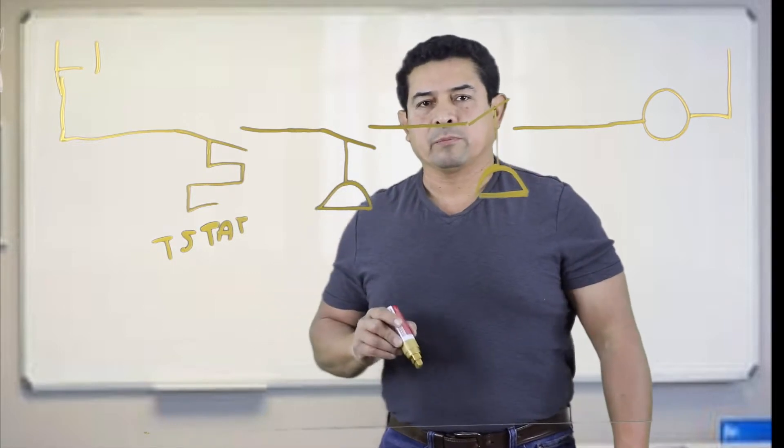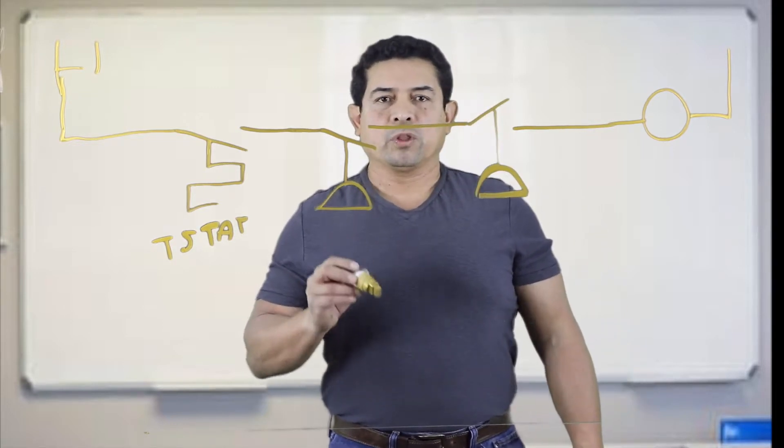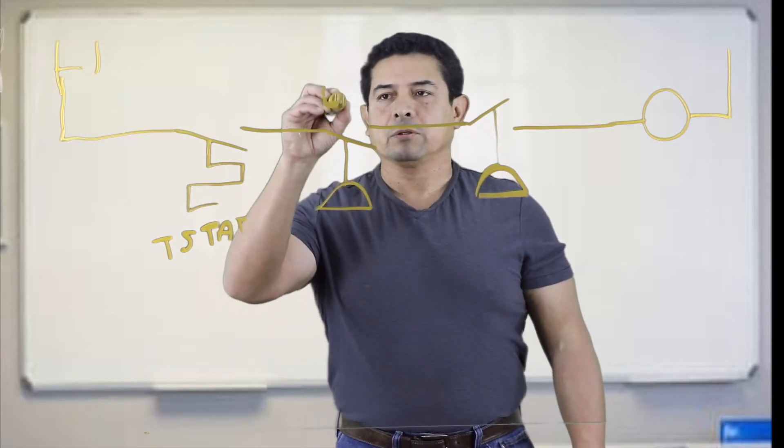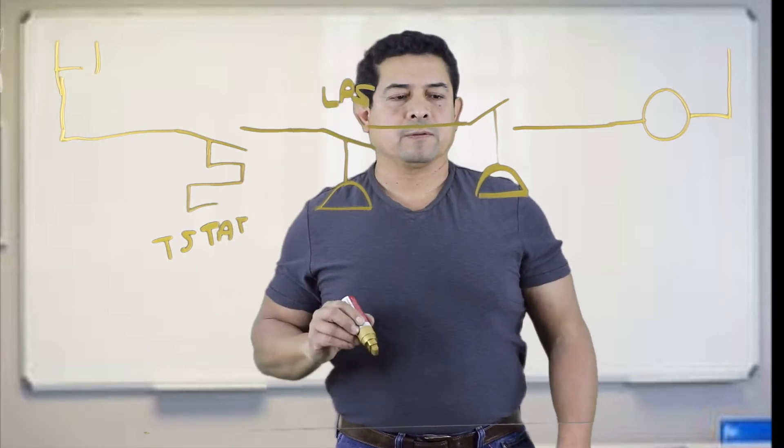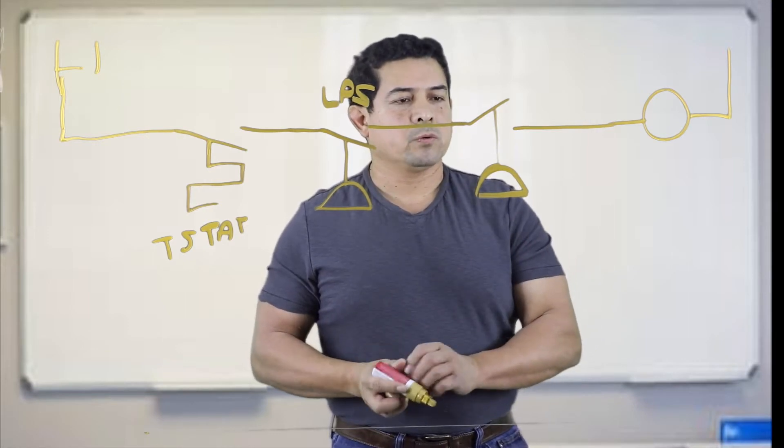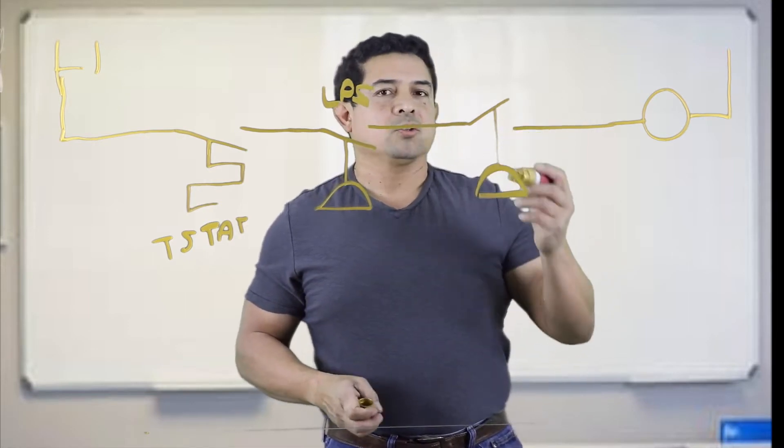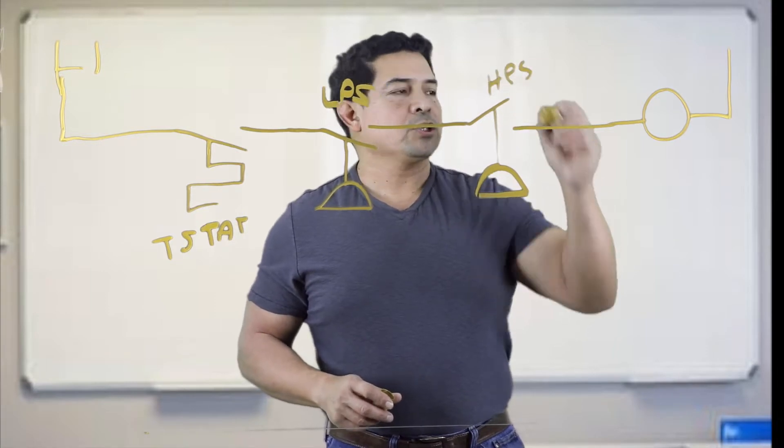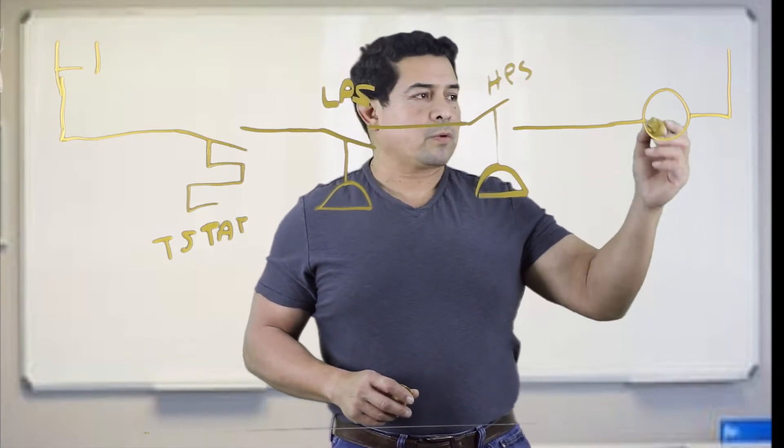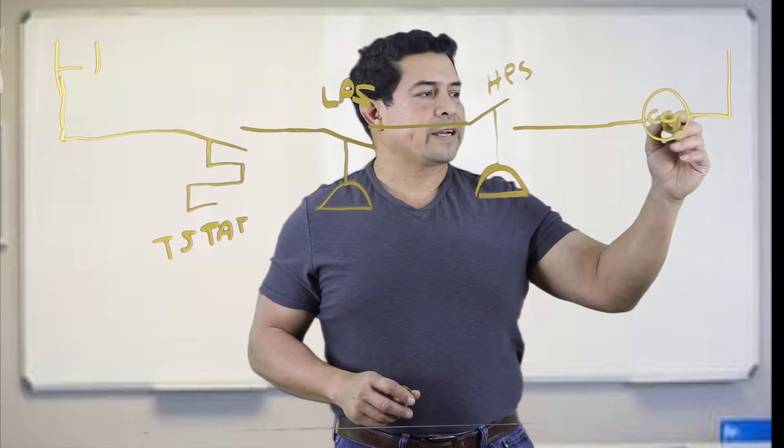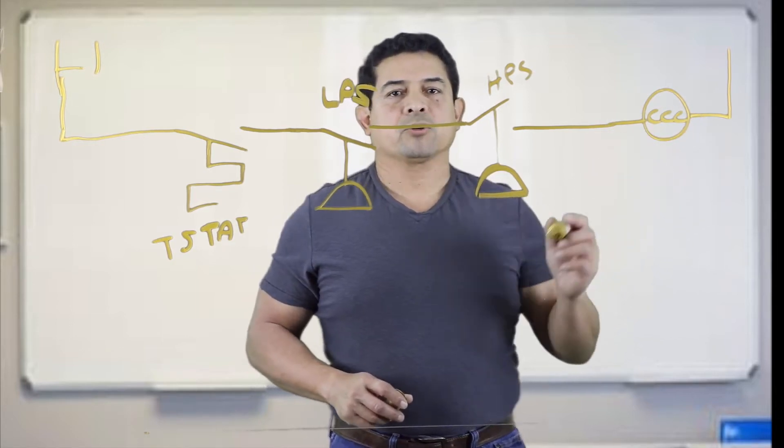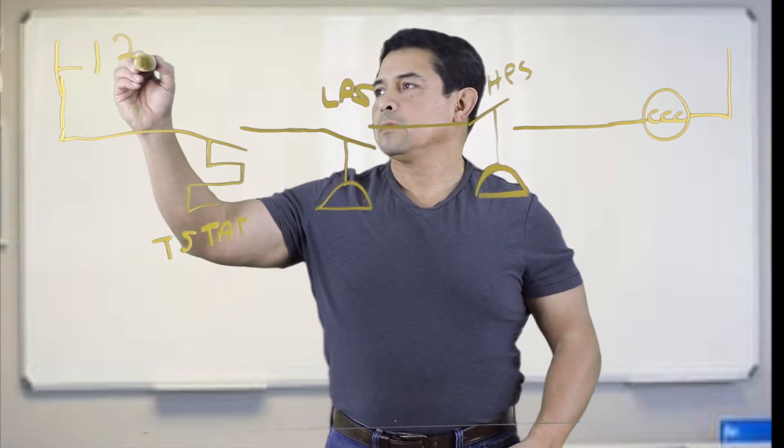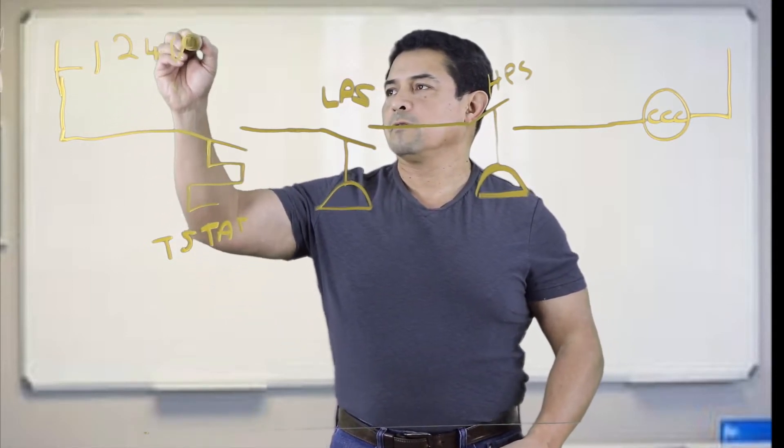So what would this one be? Pressure switch that opens when the pressure falls. Well, this would be your low pressure switch. This one is going to open when the pressure gets high. So we could say that this is going to be our high pressure switch. And this load right here, this would be your compressor contactor coil, your compressor contactor coil. So all of this, basically, is going to be 24 volts.